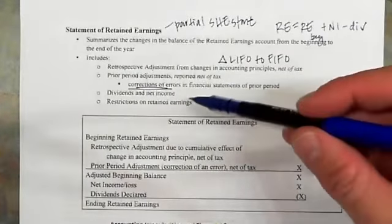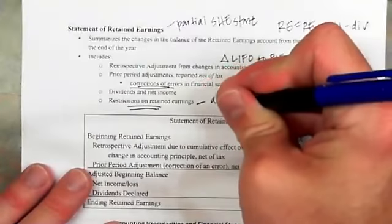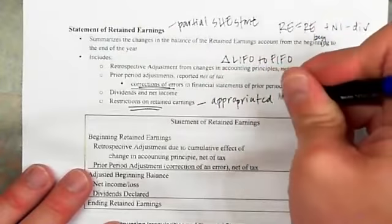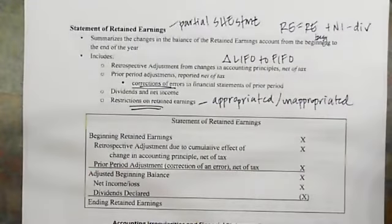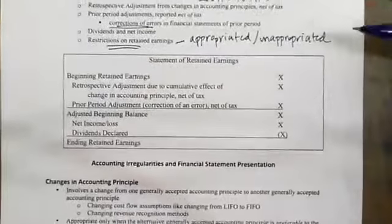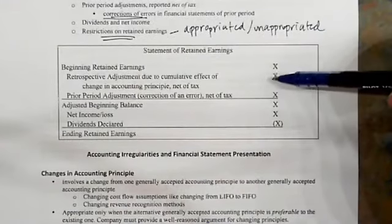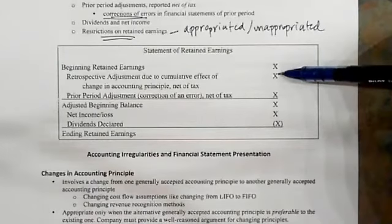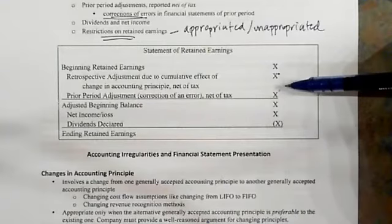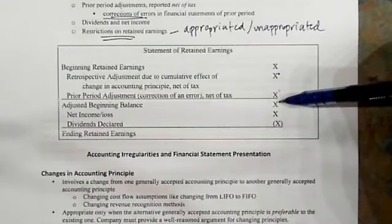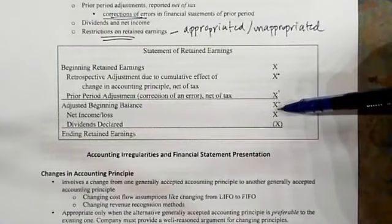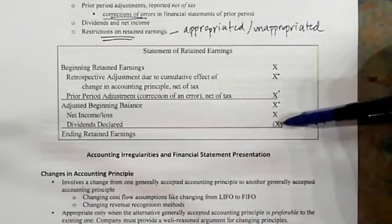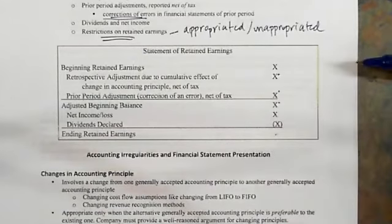Of course, dividends and net income are also included. Any restrictions on retained earnings are noted as well — there's appropriated and unappropriated retained earnings. Appropriated retained earnings cannot be paid out as dividends; unappropriated retained earnings are free to be paid as dividends. So the full statement is: beginning retained earnings, plus or minus the cumulative change in accounting principles and the correction of any error, giving an adjusted beginning balance. Then we add net income or loss, subtract dividends declared, and arrive at ending retained earnings.